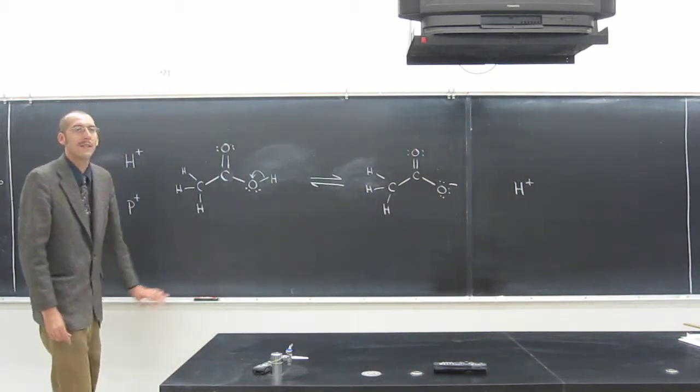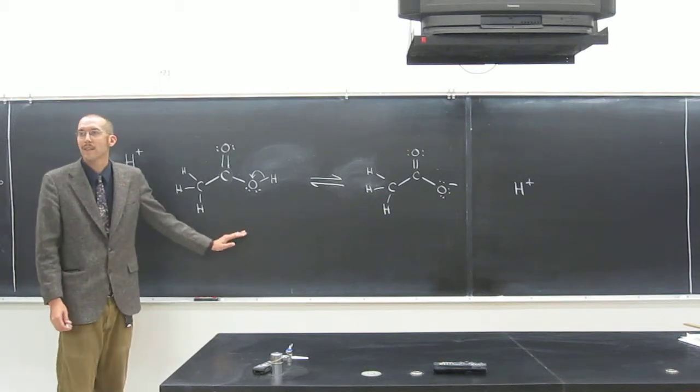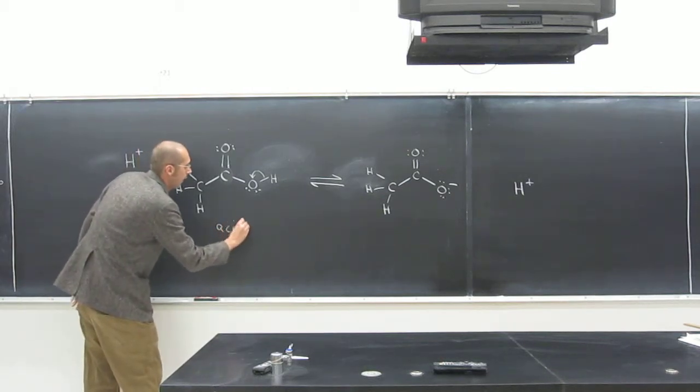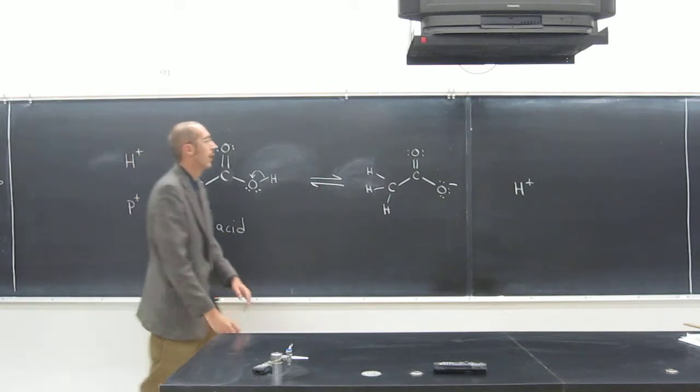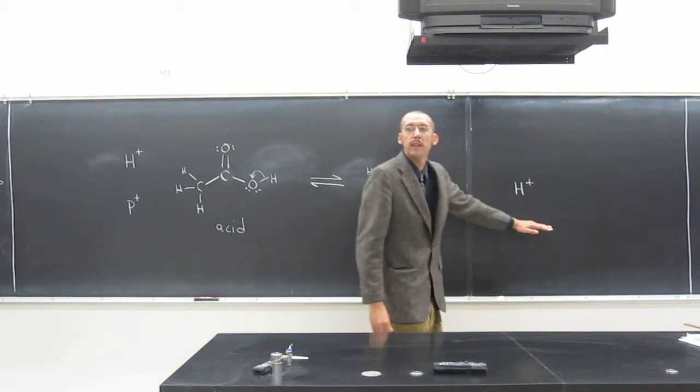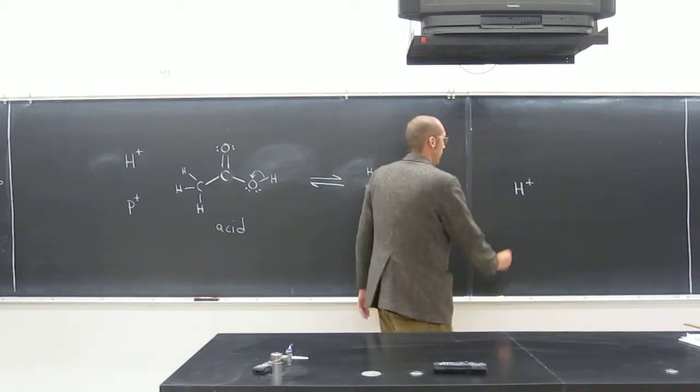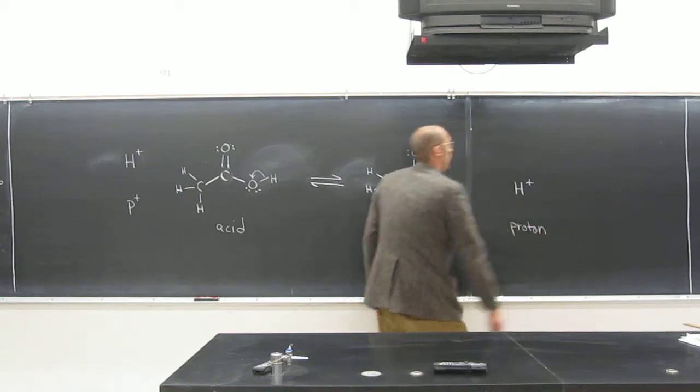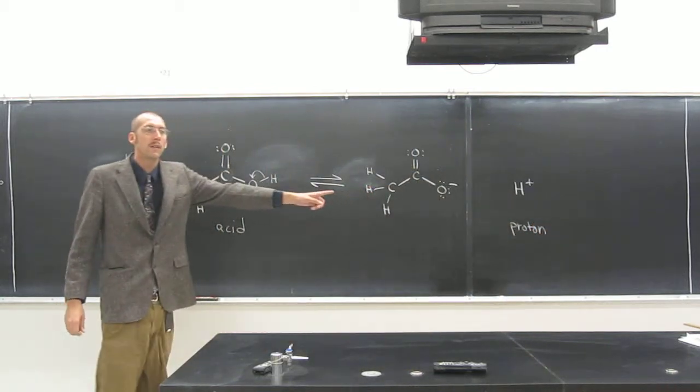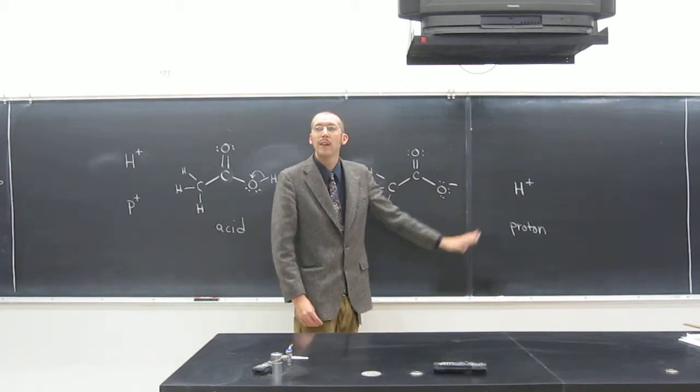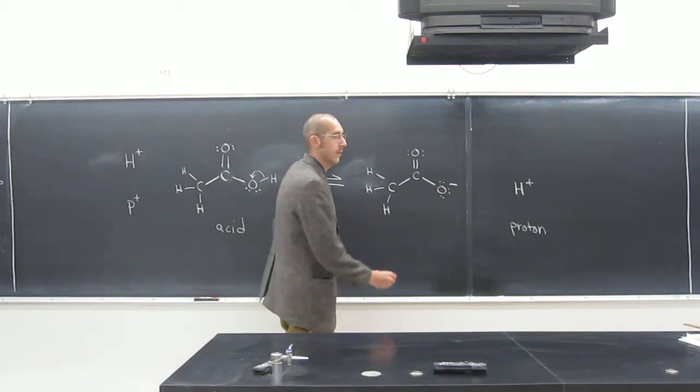So what we do, what we say is that this is acetic acid, it's an acid. Why? Because it donates a proton to this. This, remember, is a proton. And when it donates its proton, the thing that's left, this thing here, we call the conjugate base.